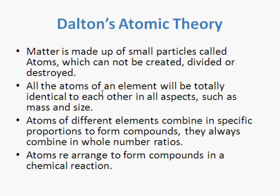The second aspect of the theory states that all atoms of an element will be totally identical to each other in all aspects such as mass and size. However, there are isotopes which might be of the same element but have different mass. Basically, in an atom there are protons and neutrons, and the number of neutrons might vary for the same element with the same number of protons. We are going to talk about protons and neutrons in the videos on Introduction to Atom, which has already been prepared and uploaded.